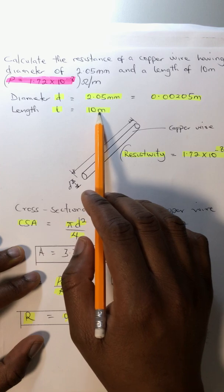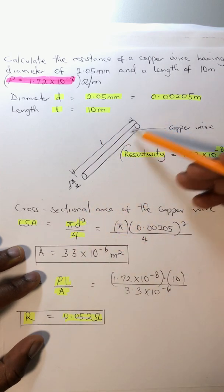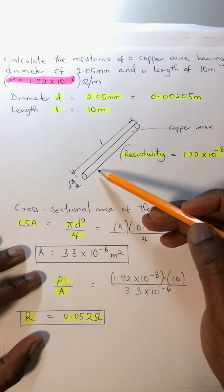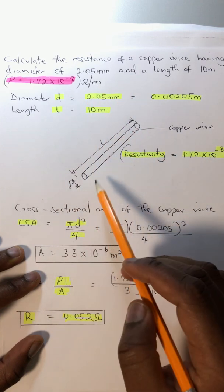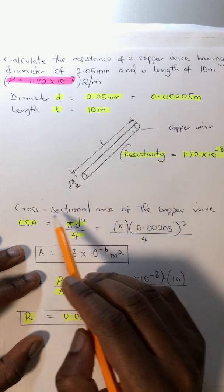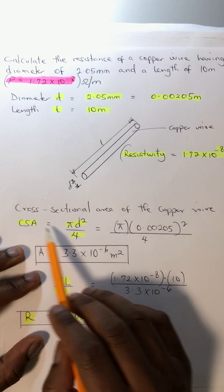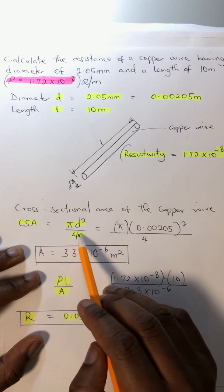For a current passing through this copper wire, to find the resistance we need to first find the cross-sectional area. The cross-sectional area formula equals πd²/4.